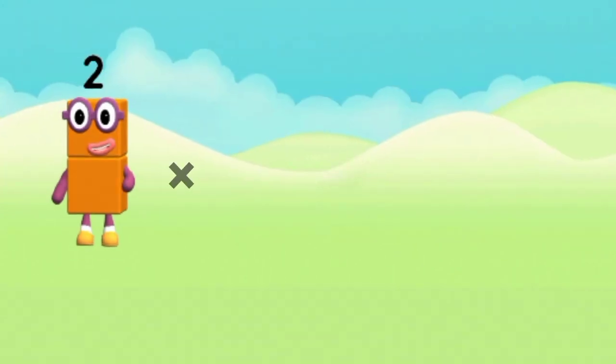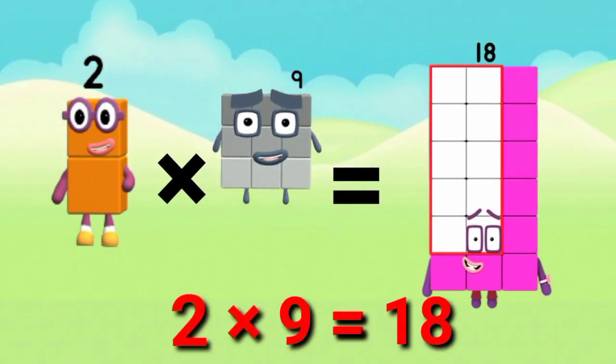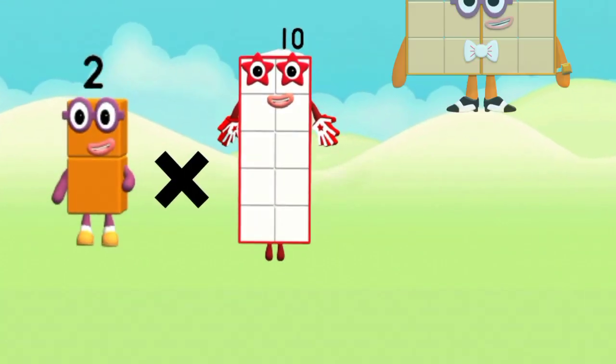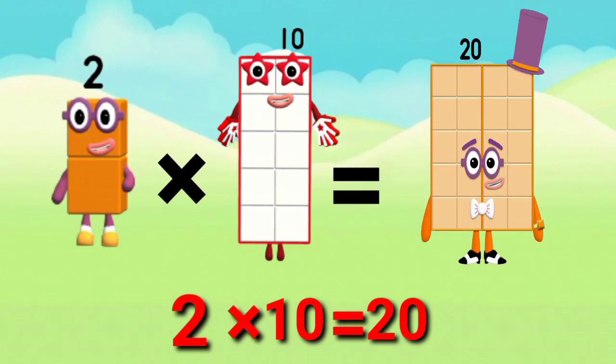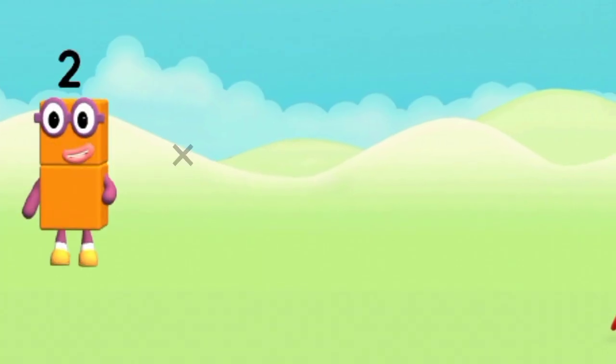Two nines are eighteen. 2 times 9 is 18. 2 times 10 is 20. 2 times 10 is 20. Again, tell me.